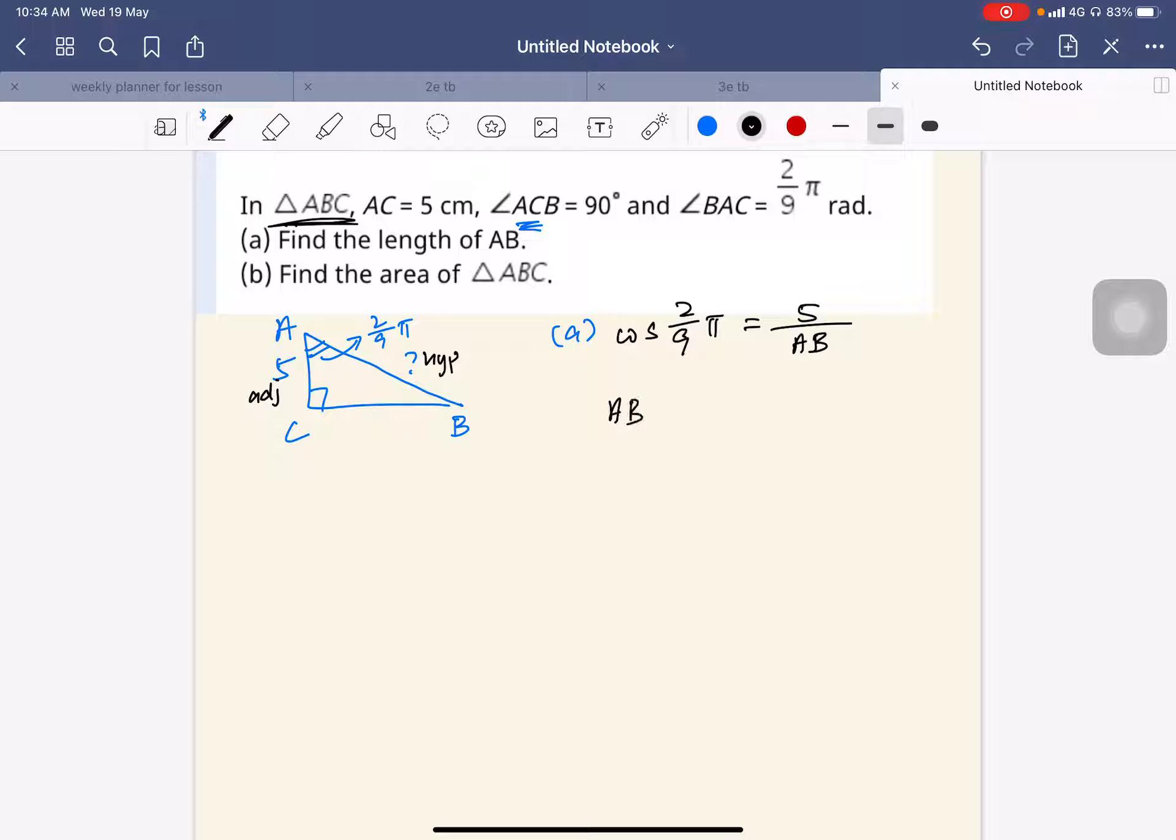So times AB on both sides. Make AB the subject. So now you use your calculator. Make sure your calculator is in the radian mode.